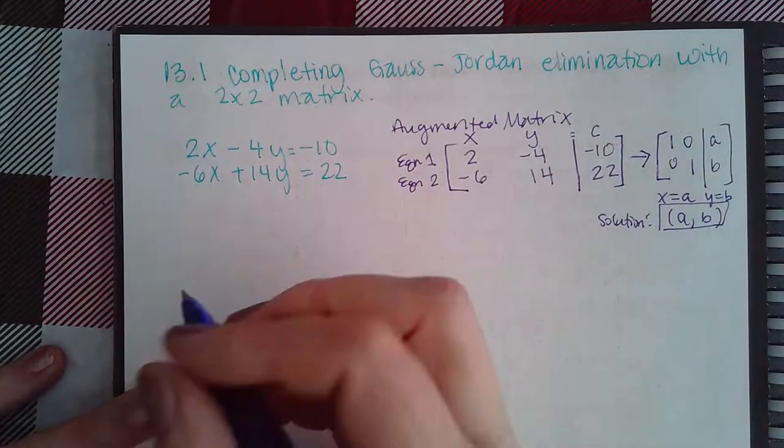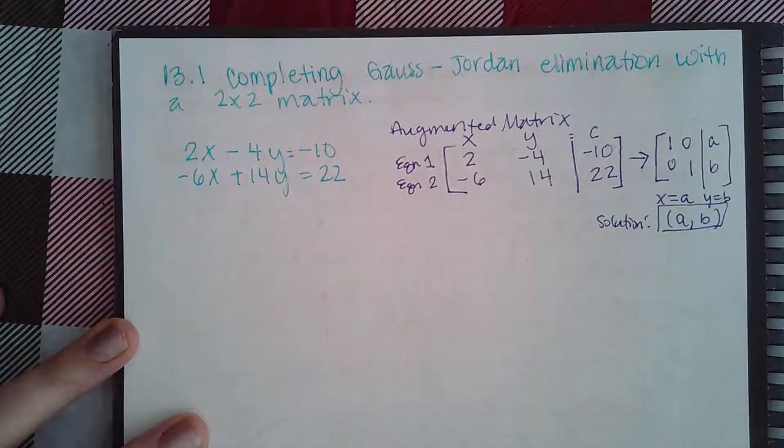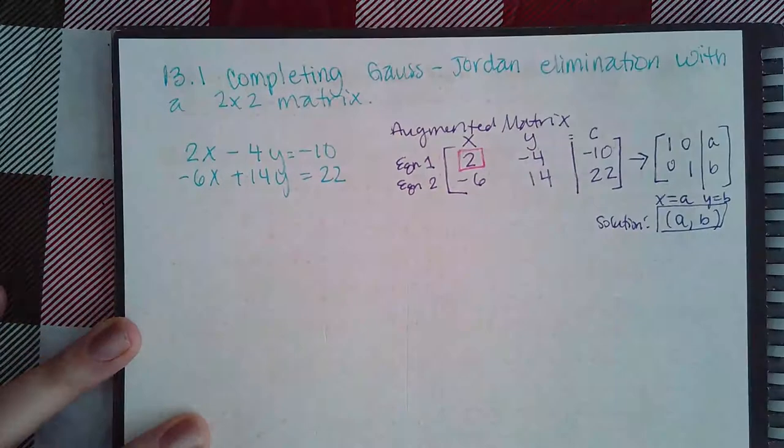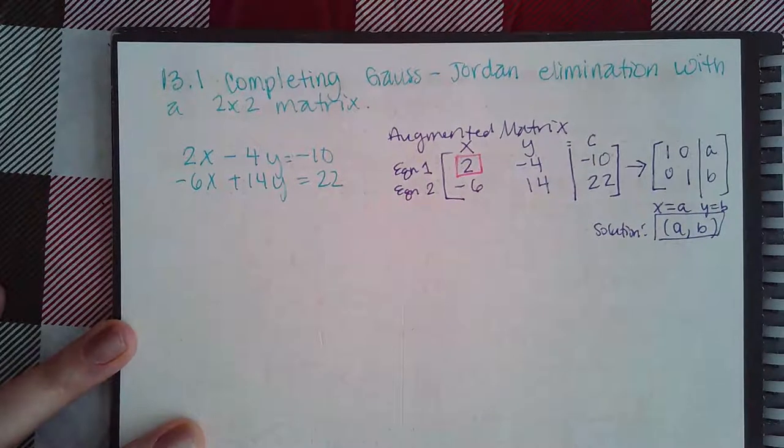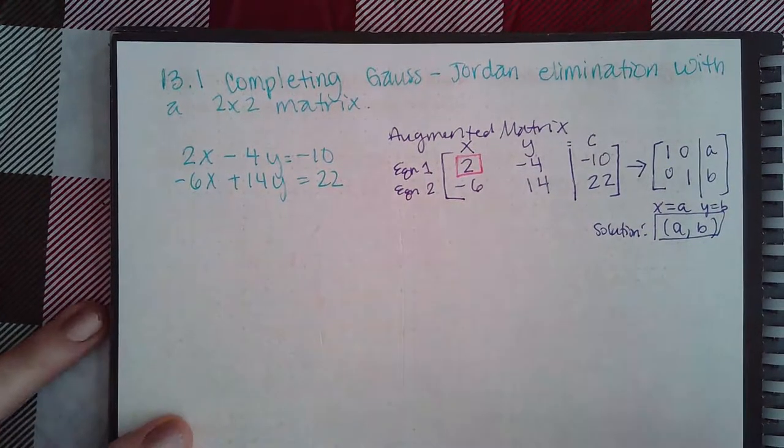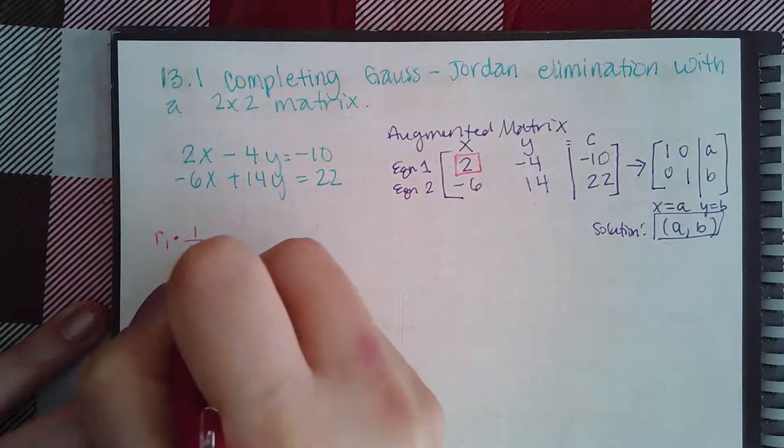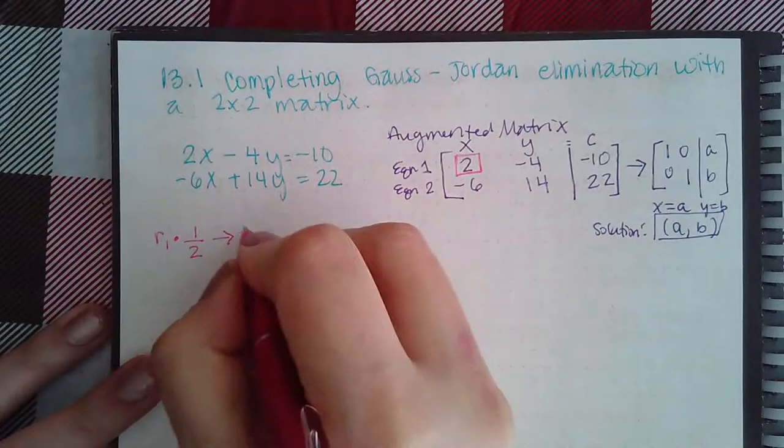So, let's go ahead and try to do that with this problem. The first thing I want to attack is I want this guy to be a 1. We know from the topic where we were finding inverses that in order to get a 1, you have to multiply by the reciprocal. So, I'm going to take row 1 times the reciprocal of 2, which is 1 half. And that will give me my new row 1.